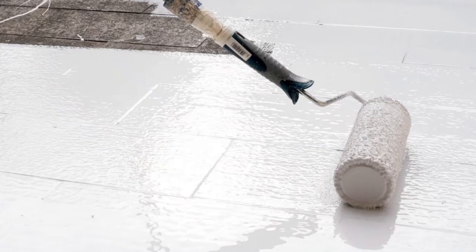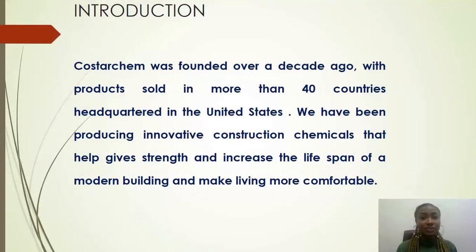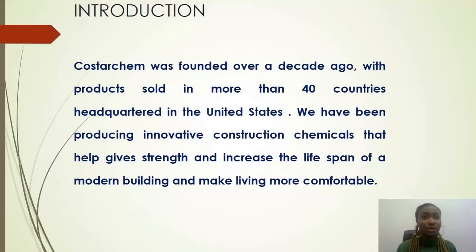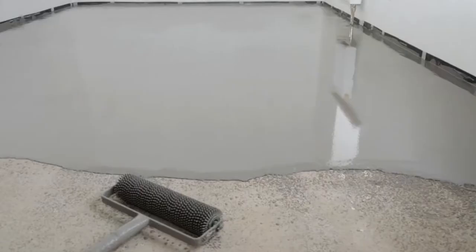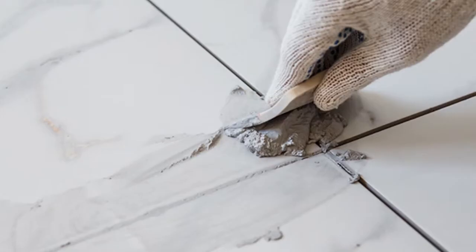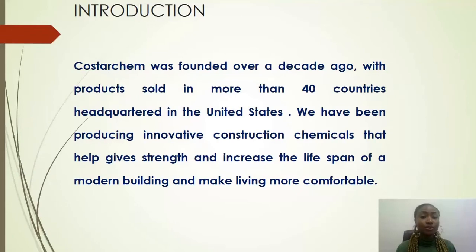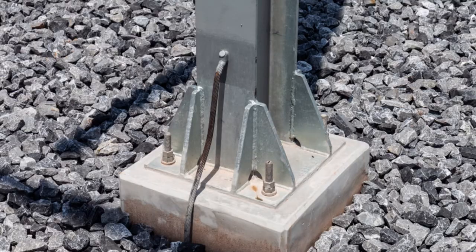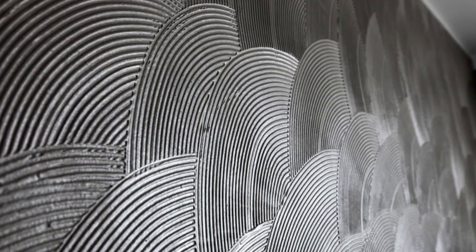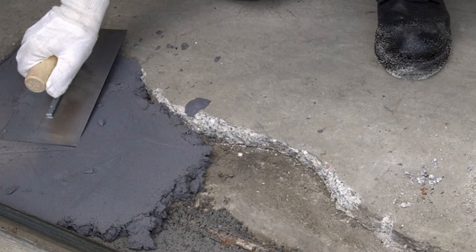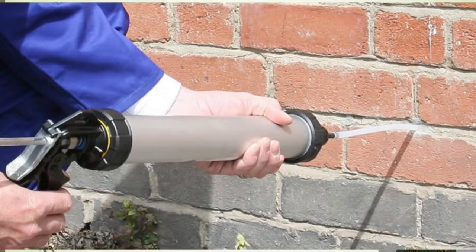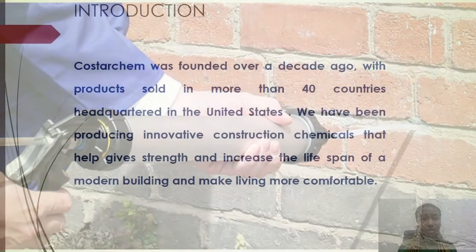We have different categories of construction chemicals ranging from concrete admixtures to waterproofing admixtures. We have waterproofing membranes — polyurethane membrane, cementitious membrane, bituminous membrane, and acrylic membrane. We also have a flooring system ranging from cementitious to resin systems, tiling solutions including tile adhesive, tile grouts, structural grout, expansion joint sealants, decorative mortar, repair and bonding agents, and dampness and vapor remediation.